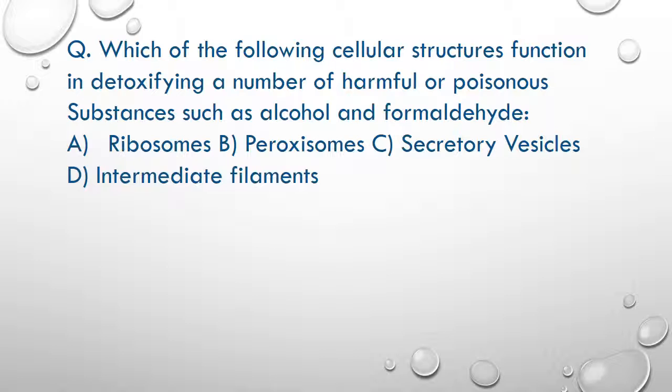Which of the following cellular structures function in detoxifying harmful or poisonous substances such as alcohol and formaldehyde? Is it A. ribosomes, B. peroxisomes, C. secretory vesicles, or D. intermediate filaments? The correct choice is peroxisomes.